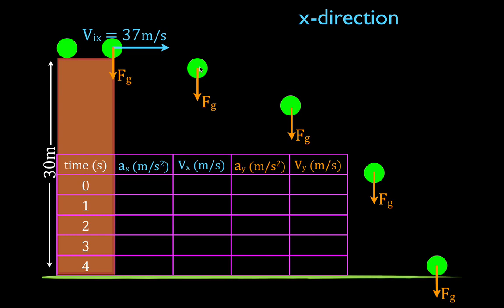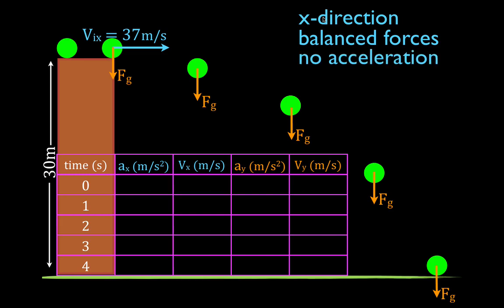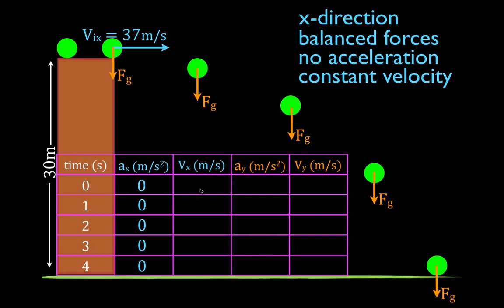Here are some important points to remember for the motion of this object. In the x direction, the forces are balanced — there are no forces — and therefore there is no acceleration. The object is not accelerating in the x direction. So for each point in time, the acceleration is 0 meters per second squared. If there's no acceleration, then the velocity must be constant in the x direction. The initial velocity was 37 meters per second, so the velocity at each point in time is going to be 37 meters per second.